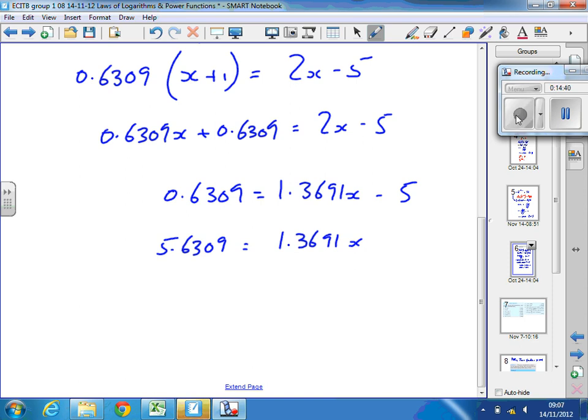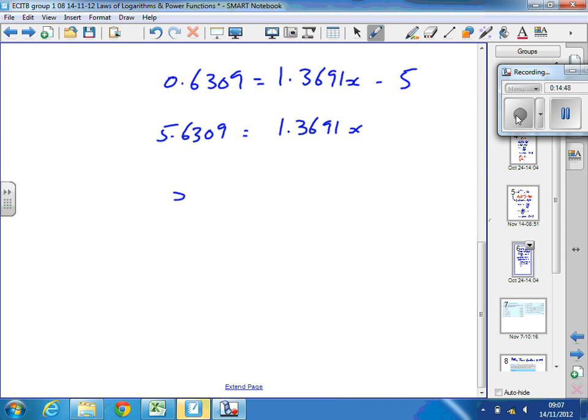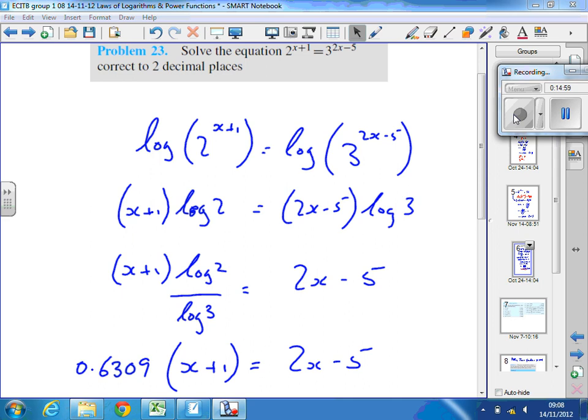And now, we're virtually there. We've just got to divide both sides by 1.3691 and we've got x. So, x equals 5.6309 divided by 1.3691.